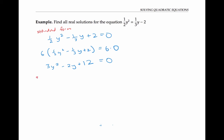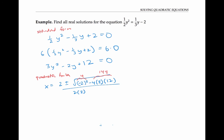I could try to factor this, but it's easier to use the quadratic formula. With a equals three, b equals negative two, and c equals 12, we get x equals two plus or minus the square root of four minus 144, all over six. That's the square root of negative 140 over six. Since we can't take the square root of a negative number and get a real number — there's no real number whose square is negative — our conclusion is that this quadratic equation has no real solutions.